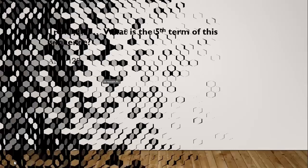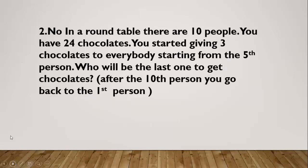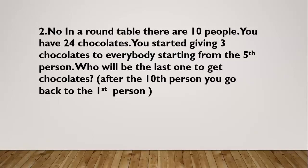Let's go to our next problem. In a round table there are 10 people. You have 24 chocolates. You start giving 3 chocolates to everybody starting from the fifth person. Who will be the last one to get chocolates? After the 10th person, you go back to the first person. There are 10 people. Starting from the fifth person, I first gave the fifth person three chocolates.